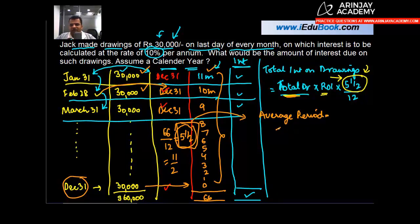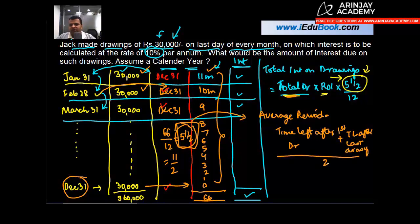Now this average period which is five and a half can also be calculated by using the following formula which says: time left after first drawing plus time left after last drawing divided by two. So after first drawing how much was the time left? First drawing was made on January 31, 11 months is what is left, plus how much is time left after last drawing? Last drawing is on December 31 so the time is zero months. Zero divided by two or five and a half months.